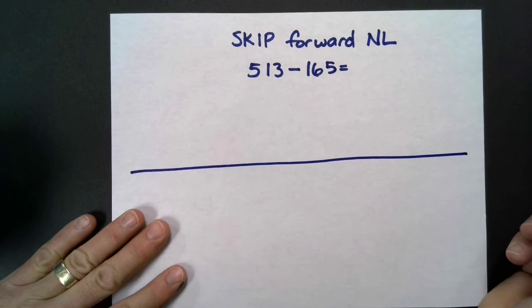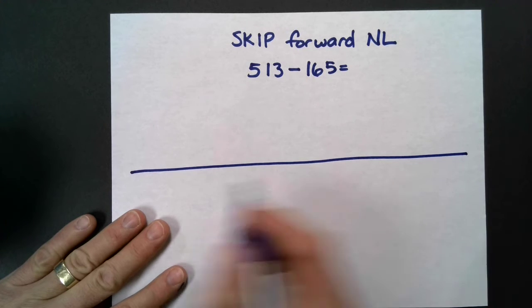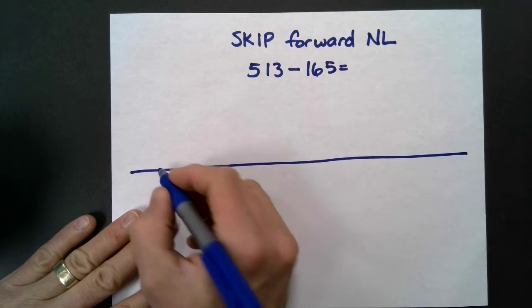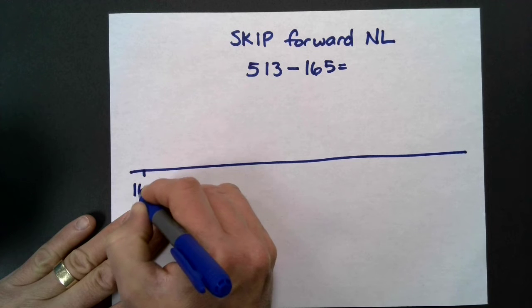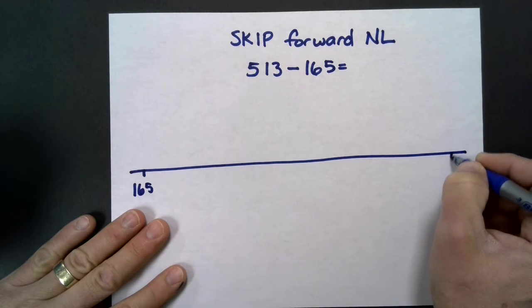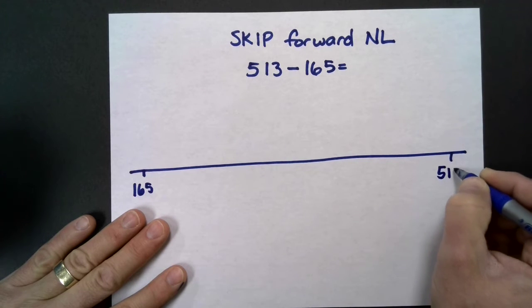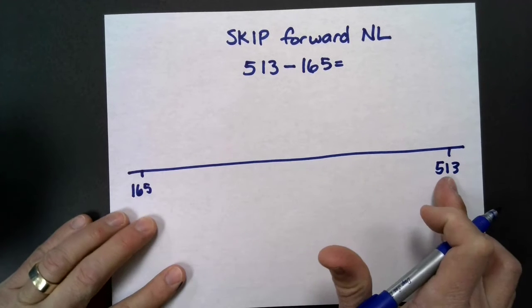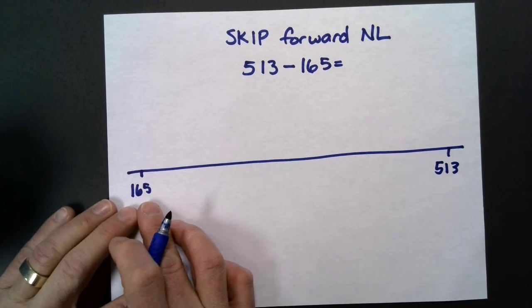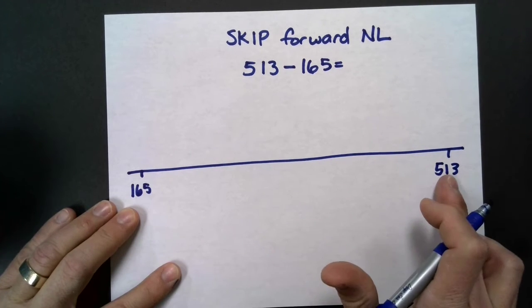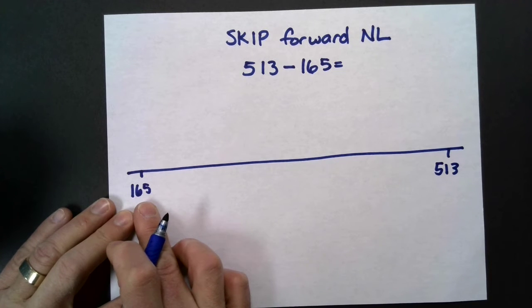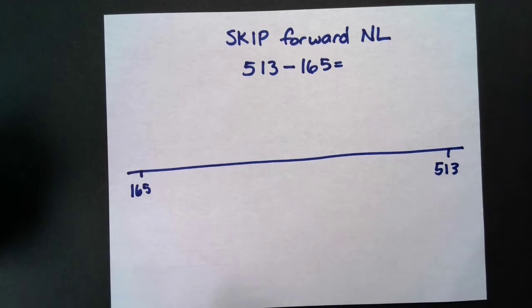What I'm going to do is first draw a line and place both numbers on it. Because we read numbers left to right, I'm going to put the smaller number here and the larger number here. These numbers are not the same. What we're essentially doing is finding the difference between these numbers. How many numbers are in between 165 and 513?